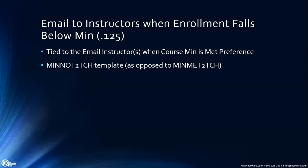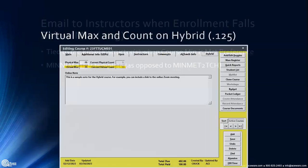Email to instructors when the enrollment falls below minimum. If you're already taking advantage of the notification when the minimum is met — the instructor gets notified — now they'll also get notified when somebody cancels and the course may not go unless somebody else signs up. We've added this ability in Student Manager as of version 125, so it is available now.